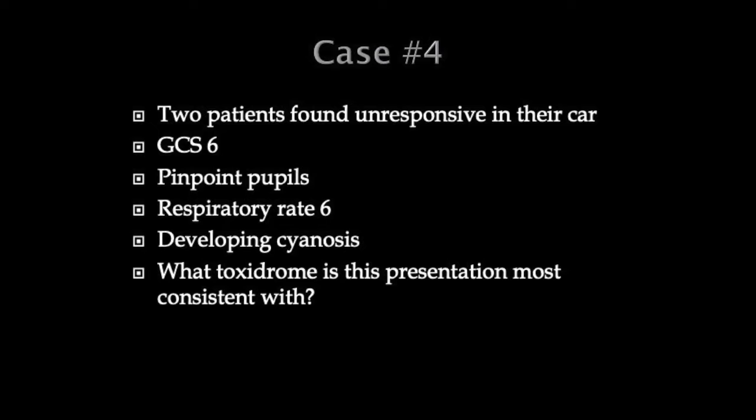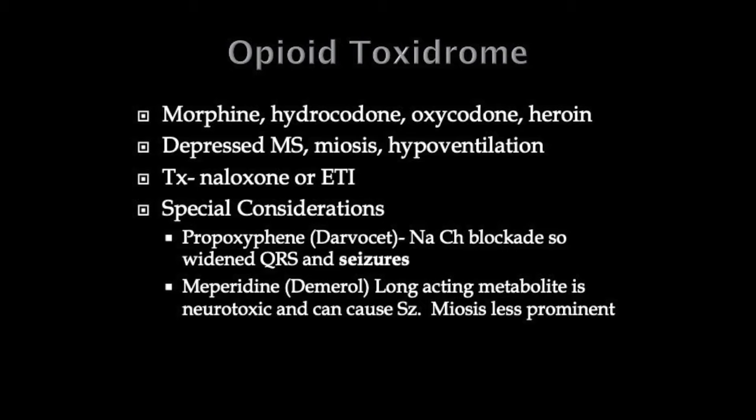If they go from unresponsive to wiggling around a little, that's not consistent with an opioid toxidrome — that's consistent with their own endogenous opioids being blocked. A runner's high is caused by endogenous opioids, and you can take that away with Naloxone. Don't give more Naloxone than you need because you'll just create a combative, vomiting patient. There are many opioids: morphine, hydrocodone, oxycodone, and others. Propoxyphene was pulled off the market because it causes sodium channel blockade, leading to QRS widening and seizures similar to TCAs. Meperidine can cause seizures and miosis is less prominent — mostly relevant for board exams.